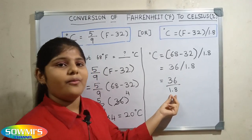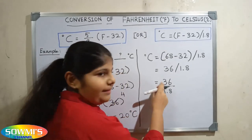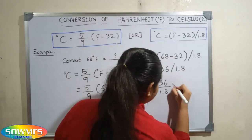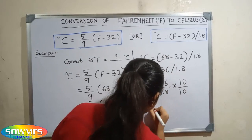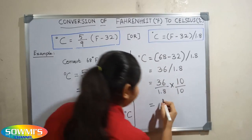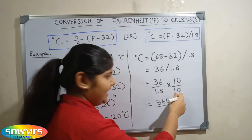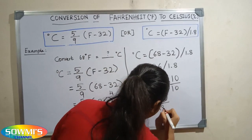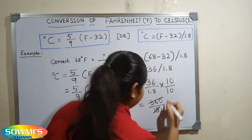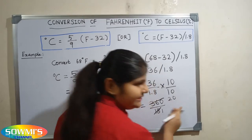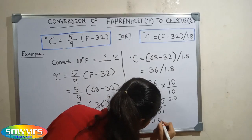Here there is 1 digit after the decimal point. So we have to multiply both top and bottom by 10. 36 tens are 360. 1.8 tens are 18. Here 18 and 360 gets cancelled. 18 ones are 18, 18 twenties are 360. So the answer is 20 degree Celsius.